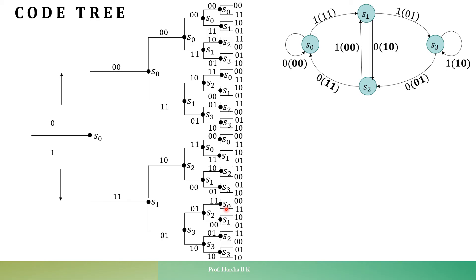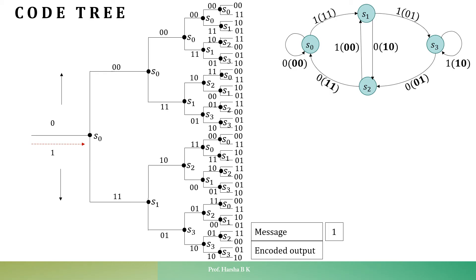Now that the code tree is drawn for 5 stages, let us encode the message. We begin from the initial state S0. We take the message one bit at a time. The given message is 10011. The first bit is 1, so we move in the downward direction. The encoded sequence obtained is 1,1 and the present state is now S1. So for message bit 1, the encoded output is 1,1.